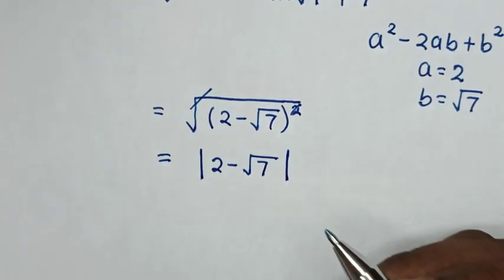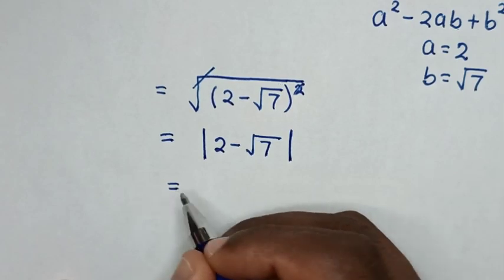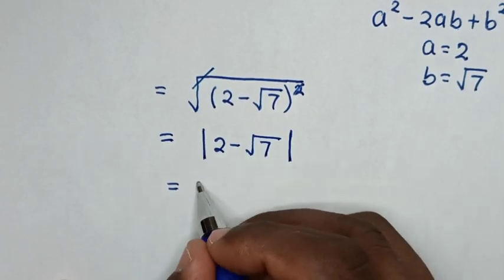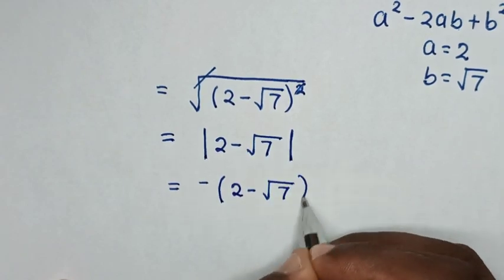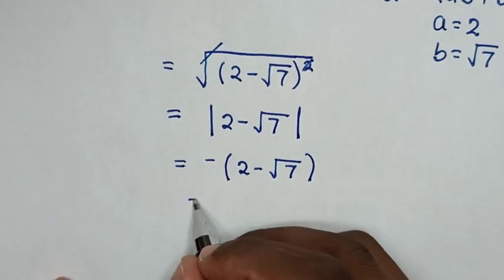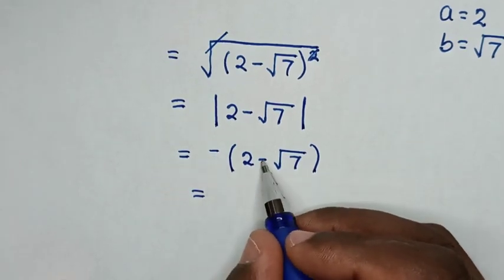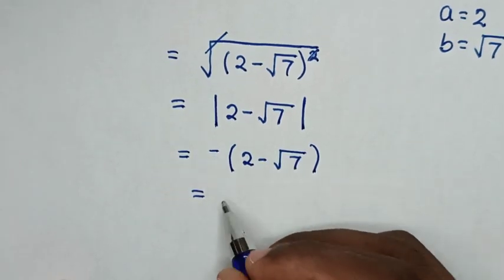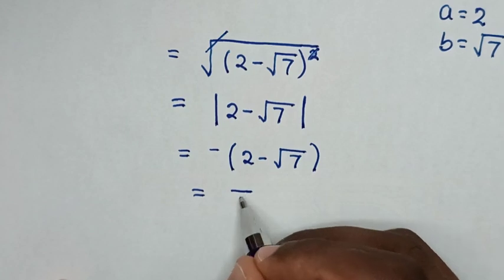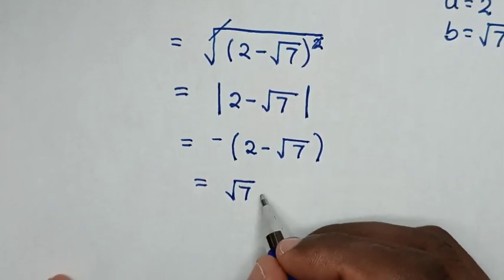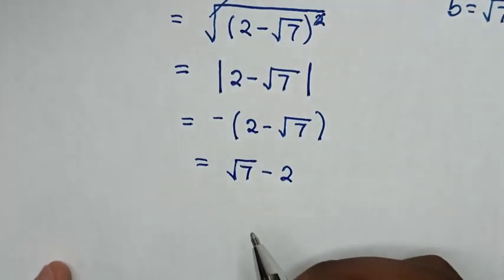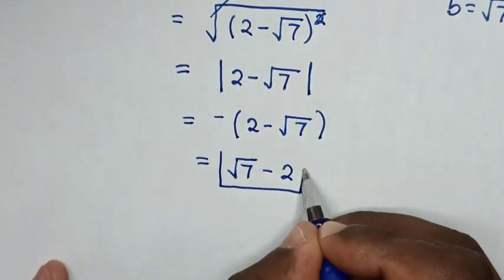Then it will be equal to, for this to be positive, we multiply by negative: negative of 2 minus square root of 7 brackets. So it will be equal to negative times negative square root of 7, which is positive square root of 7, then negative times positive 2 is negative 2. So this is our final answer: square root of 7 minus 2.